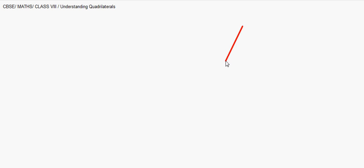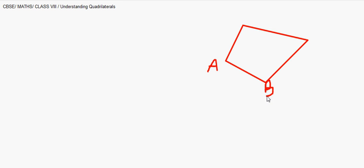We are now taking up quadrilaterals in understanding shapes. I'll draw a four-sided figure where not three of the points are collinear, and name the vertices as A, B, C, and D. The sides are AB, BC, CD, and DA.